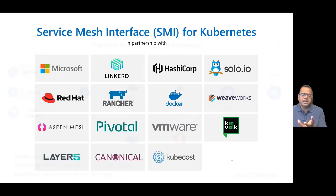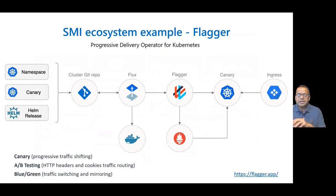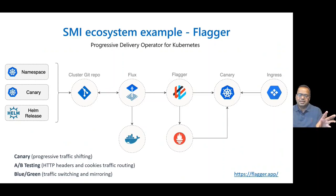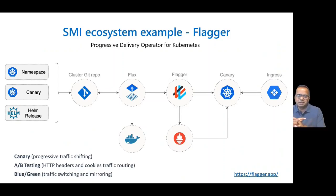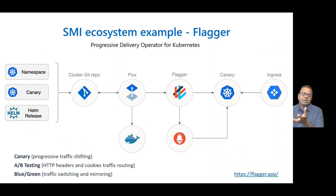Let's look at one implementation where the SMI concept really comes in handy. Folks use Flagger as a progressive delivery operator for Kubernetes. If you want to implement canary deployments where you route a bit of traffic to a secondary deployment and test it before swapping out, or do A/B testing, or blue-green deployments with parallel environments — Flagger helps you do that. Flagger, by virtue of integrating with the SMI interface, can leverage any of the Service Meshes that support SMI to provide that capability.